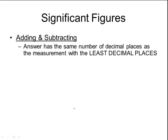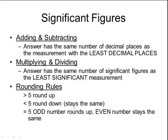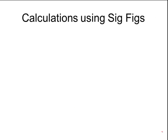When doing calculations with measurements, for addition and subtraction the answer must have the same number of decimal places as the measurement with the fewest decimal places. For multiplication and division, the answer has the same number of significant figures as the measurement with the fewest significant figures — whichever measurement had the least reliability determines how you express your answer. For rounding: if digits after the last significant place are greater than 5, round up; if less than 5, round down; if exactly 5, look at the previous digit — if odd, round up; if even, the number stays the same.